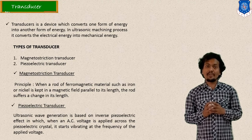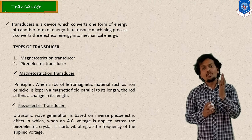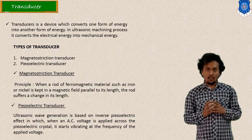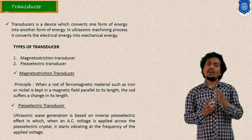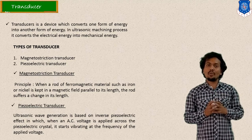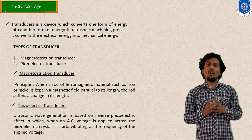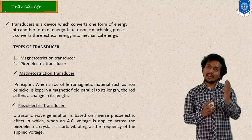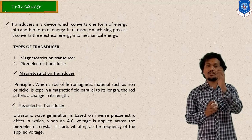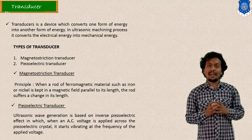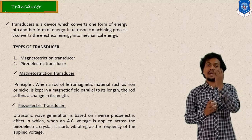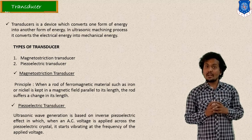So here I mentioned the magnetostriction transducer concept. So what happens? When you provide the potential difference or say electrical energy or voltage, there will be some magnetic field and due to this magnetic field, the length of your rod will be changed. So when you apply the magnetic field or say electrical energy, the length of your rod will be changed. So due to this magnetic field surrounding, the length of your rod will be changed and this change in length will be used as vibratory motion in magnetostriction concept.